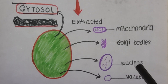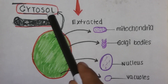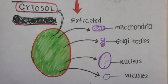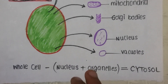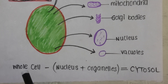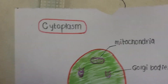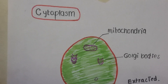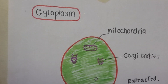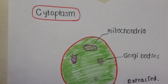If I subtract all these organelles including the nucleus from the cell, then the part left is known as cytosol. If you want to remember it throughout your life, remember this equation: if I subtract nucleus and organelles from the whole cell, the part left is known as cytosol.